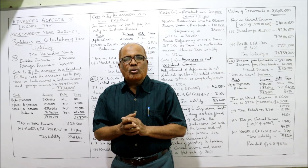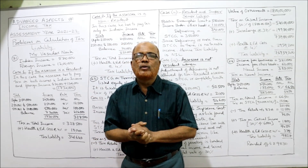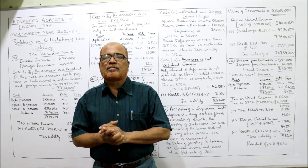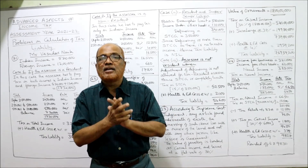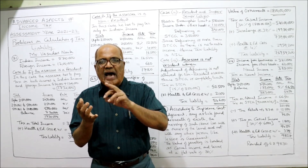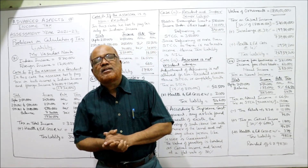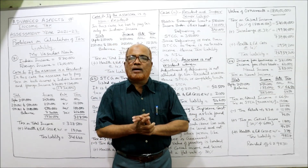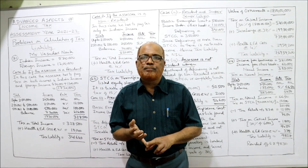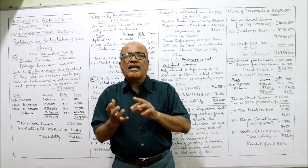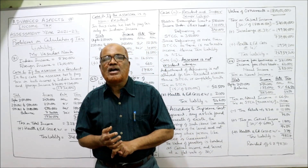You will get complete confidence on computing tax liability. This is the end of Unit 2. In this unit, three topics were covered: income from other sources, agricultural income, and computation of tax liability. In the next video, Unit 3 will begin with three topics: aggregation or clubbing of income, set off and carry forward of losses, and deductions from gross total income (GTI).